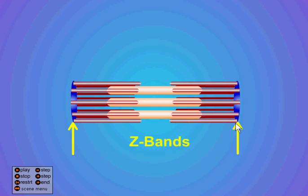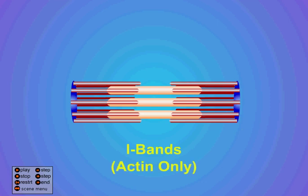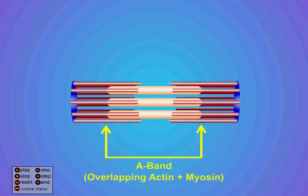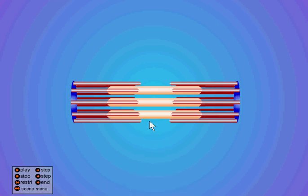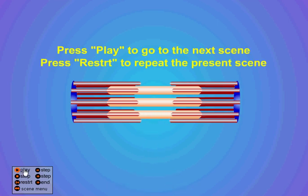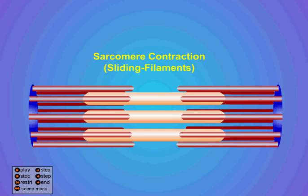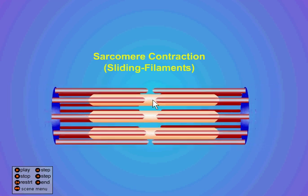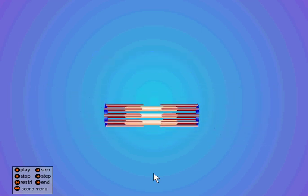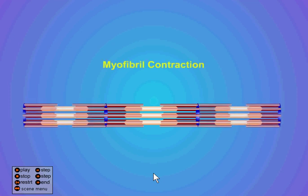Z-bands, obviously, at the end here. There's a whole lot of other bands that they refer to, but we won't really worry about those — they're really for people at a very detailed level. The H-zone is interesting, though, because it disappears. You can see here the Z-bands will get closer together, and the H-zone in the middle disappears.